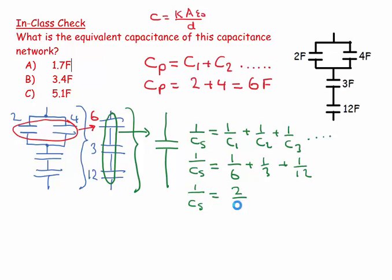to be 2 over 12, same value, plus 4 over 12, that's the same value, plus 1 over 12. So that's going to be 2 plus 4 plus 1 makes 7 over 12, and I must not forget to